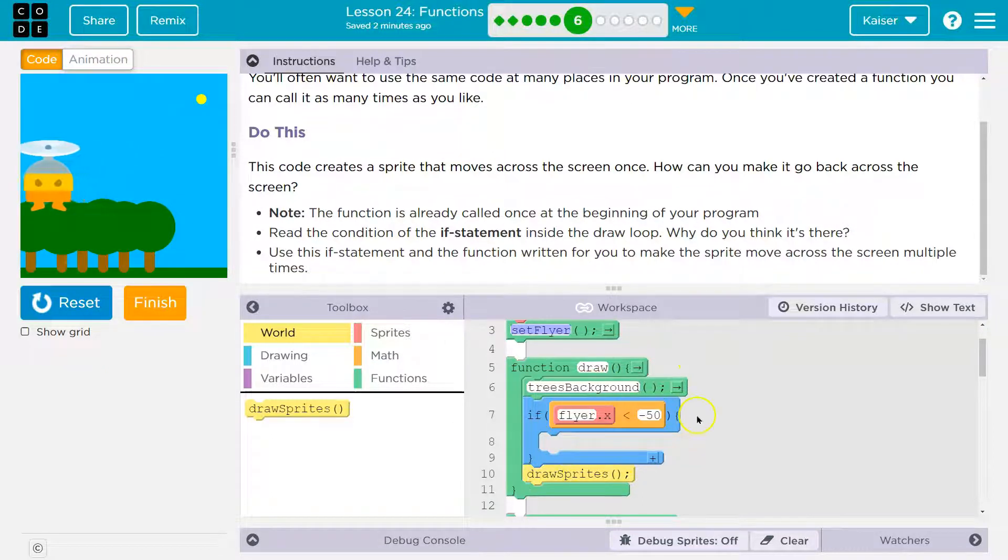Now keep in mind with an if statement, if statements will only run if this is true. So it will check every time if my sprite's x value is less than negative 50, which is off the screen. But it would never run code inside of here unless this is true.